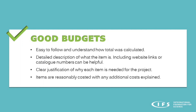In general, good budgets are easy to follow and one can understand how the total cost was calculated for each item. It should include a short but detailed description of what the item is. Including a website link or catalog number can be very helpful as well. It should clearly justify why each item is needed for the project. And lastly, the items should be obviously reasonably costed with any additional costs explained.